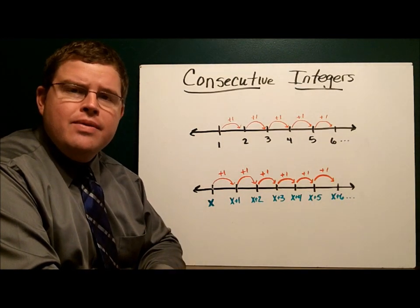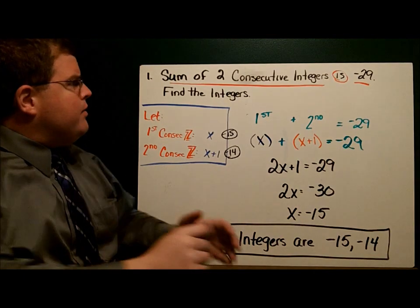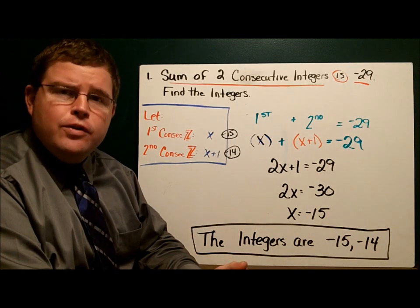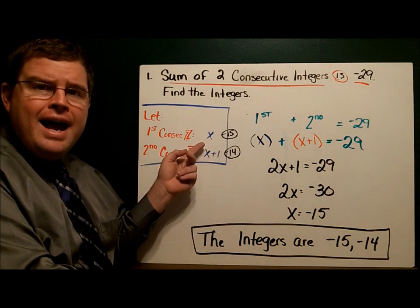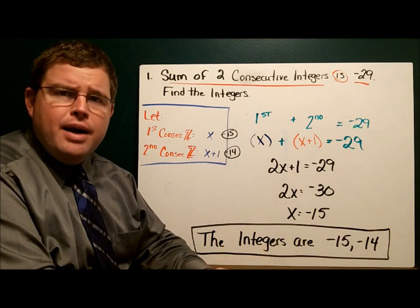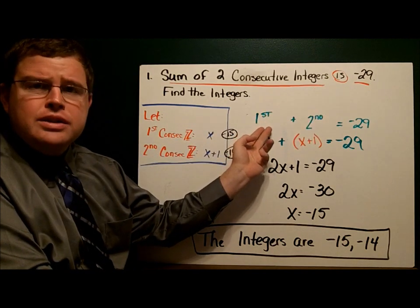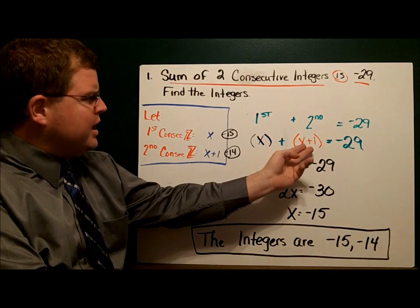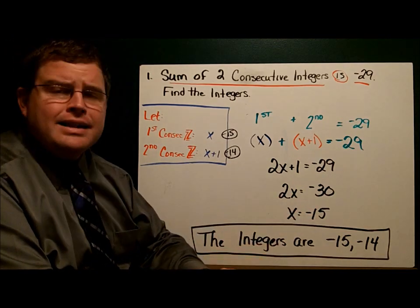Now let's take a look at a word problem involving consecutive integers. In this first problem, it says the sum of two consecutive integers is negative 29. Find the integers. First, we'll set up our let statement. We want two consecutive integers, so we'll call the first consecutive integer x, and the second consecutive integer x plus one. The sum of the two integers is negative 29, so x plus x plus one equals negative 29. Solving the equation, I get x equals negative 15.